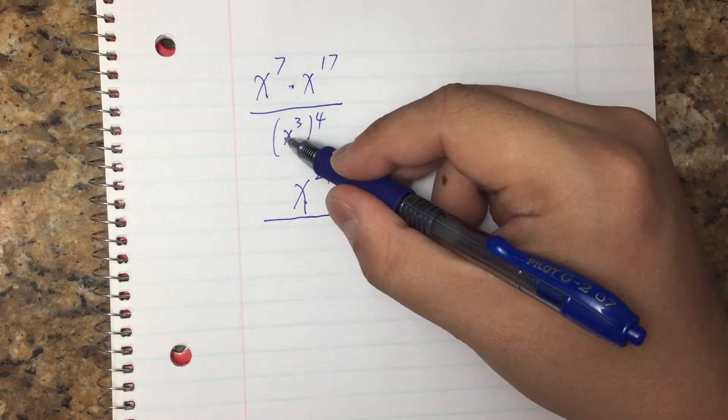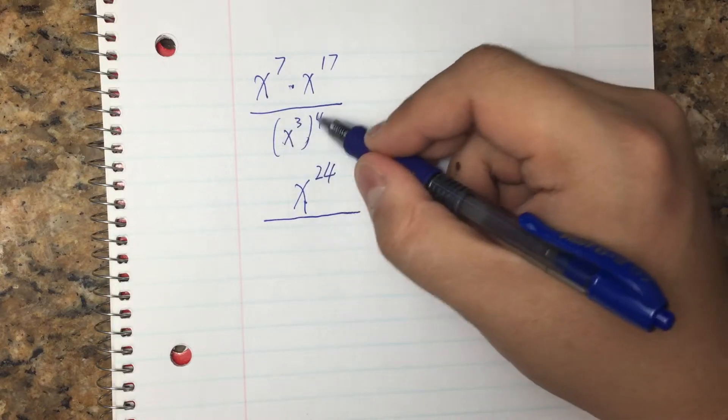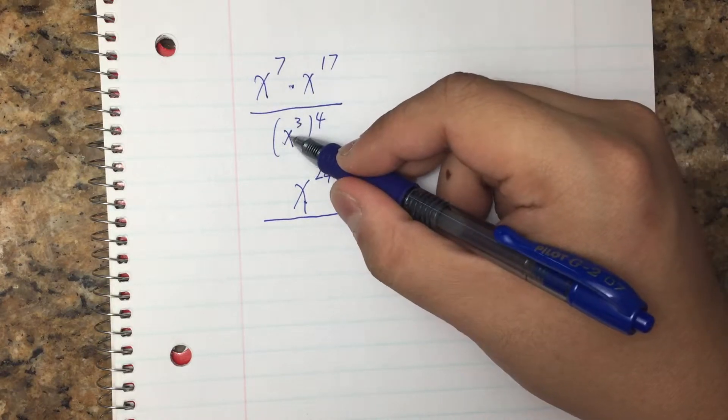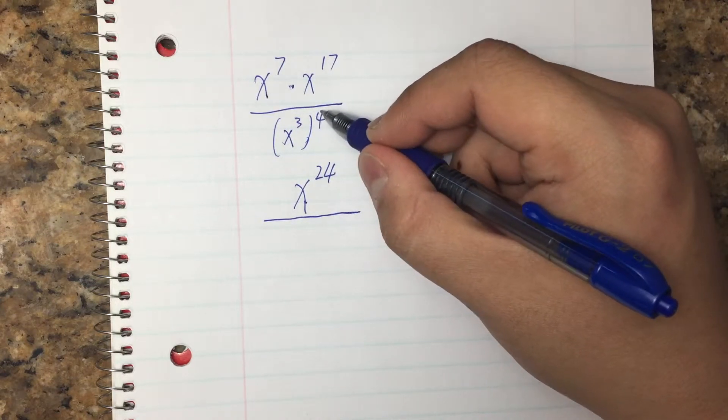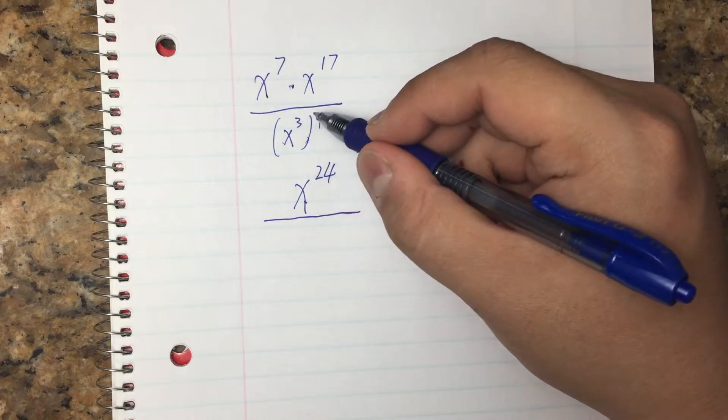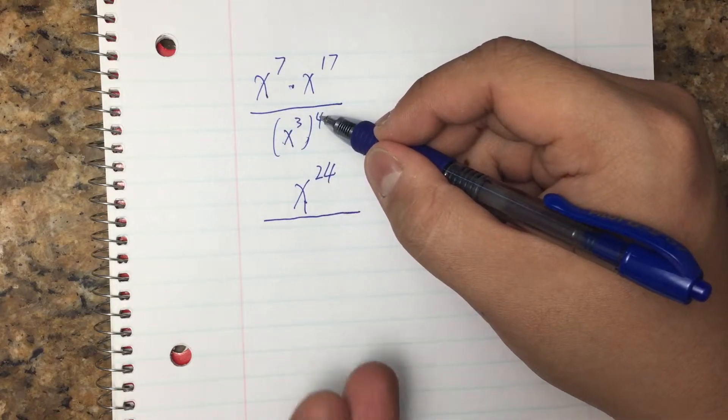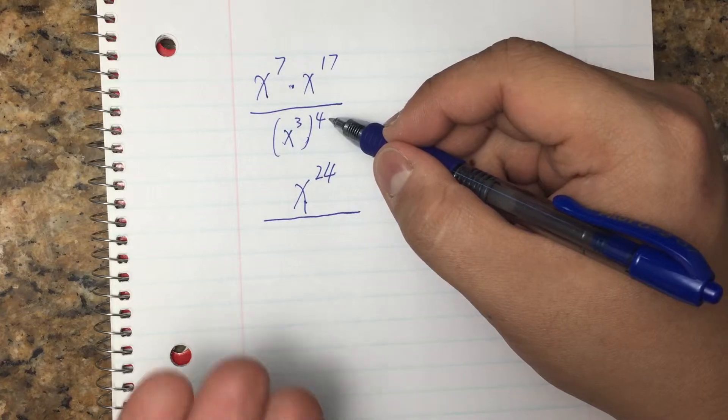And on the bottom, x to the 3rd power raised to 4th power again. That's 3 of the x, called x to the 3rd. And we also have 4 of the x to the 3rd: x to the 3, x to the 3, x to the 3 times x to the 3.